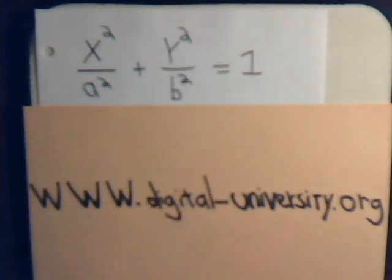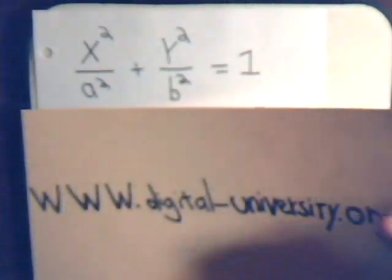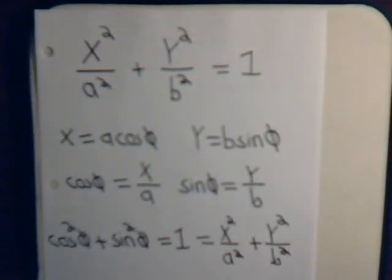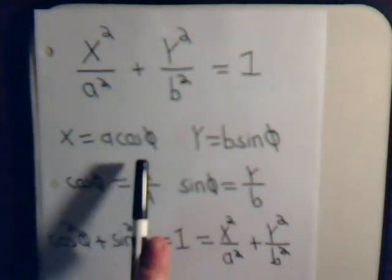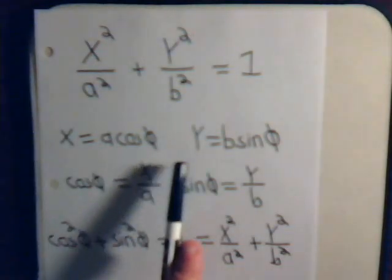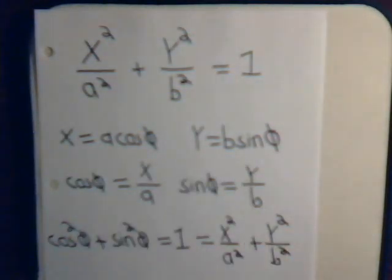This is the standard equation of an ellipse, or we can have it in parametric form: x equals a times the cosine of psi, y equals b times sine of psi. So cosine of psi is x over a, sine of psi is y over b, and cosine squared plus sine squared equals 1, which equals x squared over a squared plus y squared over b squared.